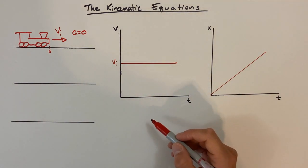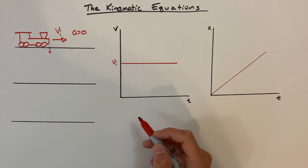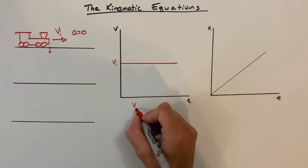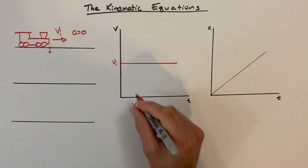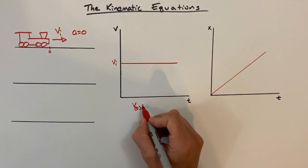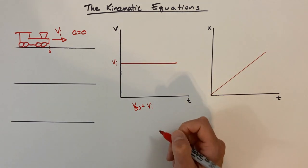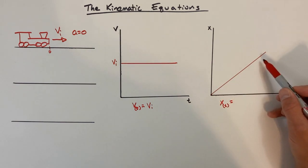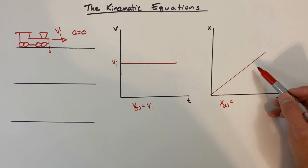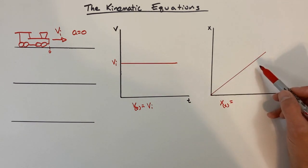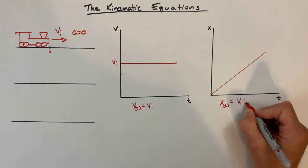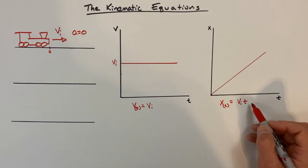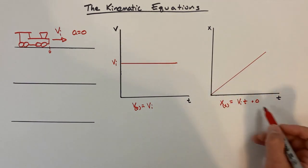In order to generate the kinematic equations, I want to come up with an equation for each of these lines. In this case, the equation for this line — V as a function of T, the velocity at any given point in time — is simply a constant, VI. Looking at this as though we're in math class, the position as a function of time is going to be the slope of the line, that's VI multiplied by T. This is slope-intercept form of a line. There is no intercept — plus zero — because the initial position is zero.